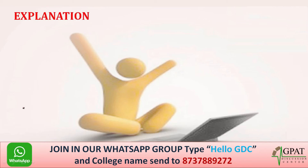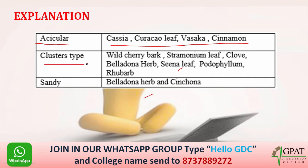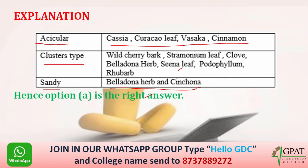Acicular crystals are observed in cassia, kurchi, cow leaf, vasaka, and cinnamon. Cluster-type crystals are found in wild cherry bark, stramonium leaf, belladonna leaf, senna leaf, podophyllum, and rhubarb. Sandy crystals are found in belladonna herb and cinchona. So the correct answer is A, P and R.